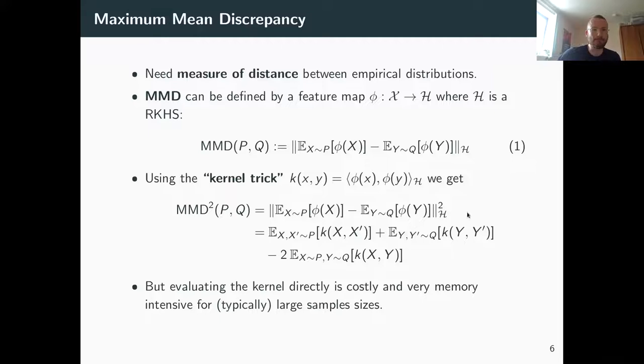Okay, so we move on to DAFT theory. The first thing we need here is a measure of distance between our empirical distributions. That's a measure of distance between the entire sampling history of our MCMC samples and the subsample that we're going to pass on to a more expensive model. That's typically defined by a feature map like this, phi, from the sample space to calligraphic H, where H is a reproducing kernel Hilbert space.